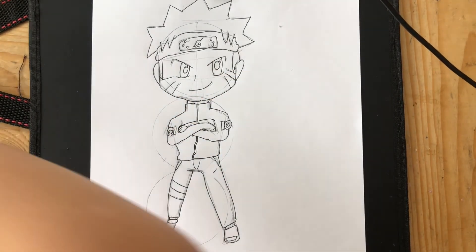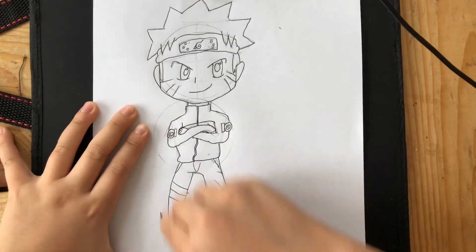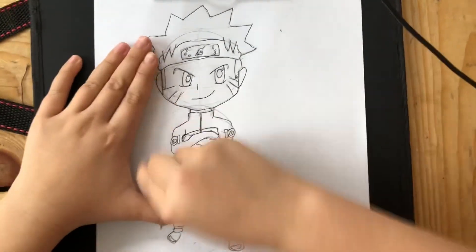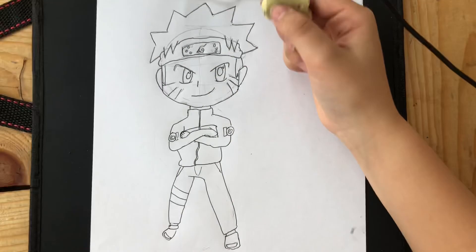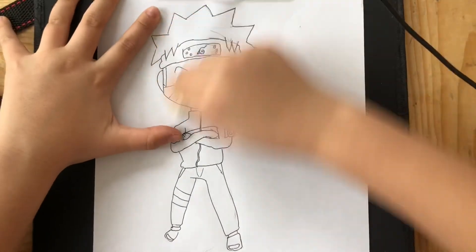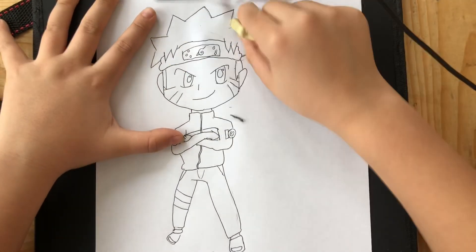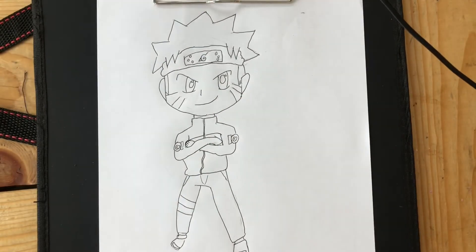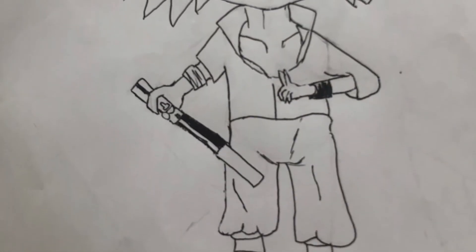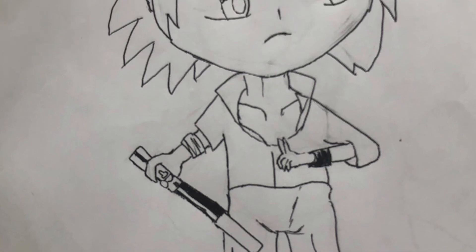Then you're finished. You can erase all the other things that you haven't traced and aren't necessary, for example the circles. You can color it, but in most anime books you don't color your pictures.